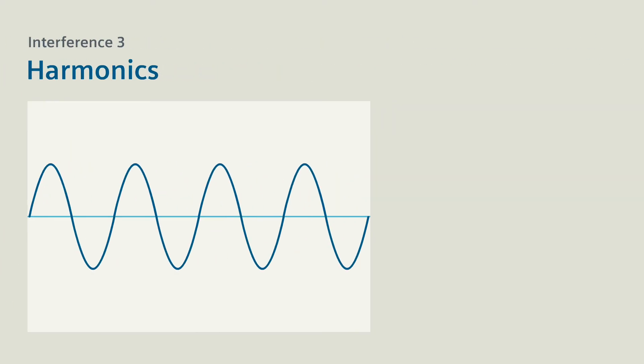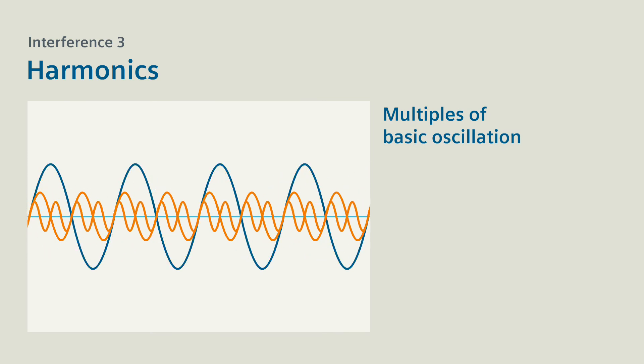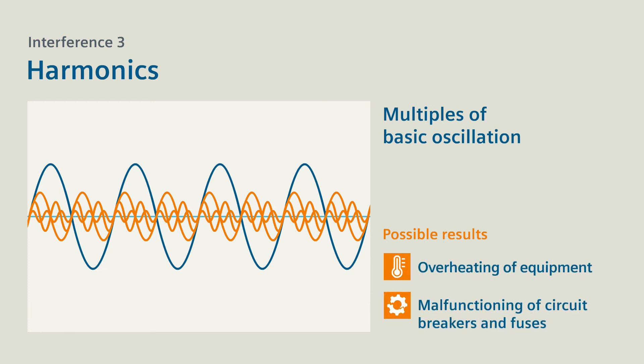Interference 3: Harmonics. Harmonics are multiples of basic oscillation. Harmonics can lead to overheating equipment and malfunctioning circuit breakers and fuses.